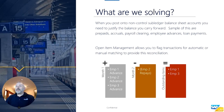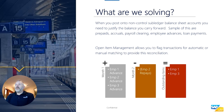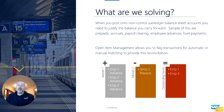First, let's look at what problem we are trying to solve. When you post into a non-controlled subledger balance sheet account, you need to justify the balance that you are carrying forward. Samples of those types of accounts could be things like prepaids, accruals, payroll clearing, employee advances, and loan advances — essentially anything on your balance sheet which is not a subledger control account.